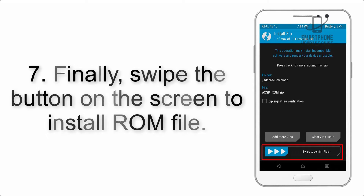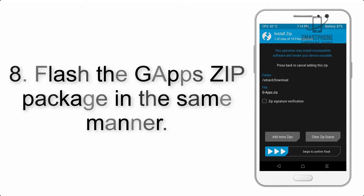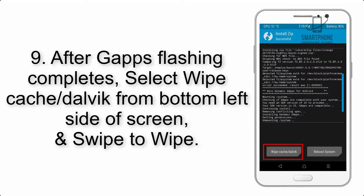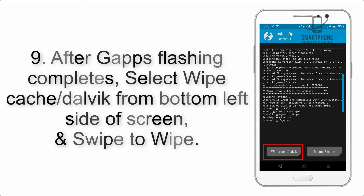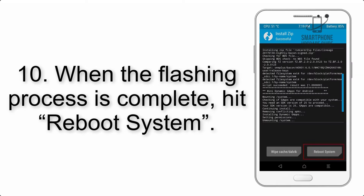Step 7: Swipe the button on the screen to install the ROM file. Step 8: Flash the GApps zip package in the same manner. Step 9: After GApps flashing completes, select Wipe Cache and Dalvik from the bottom left side of the screen and swipe to wipe.